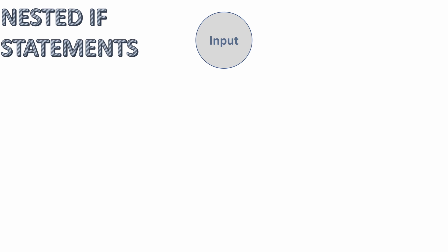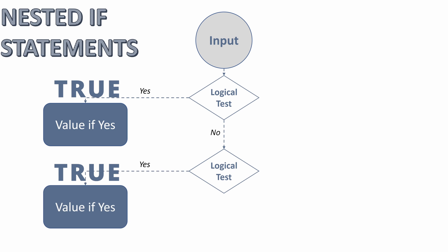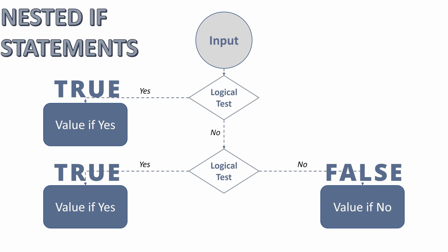So let's talk about nested IF statements. Nested IF statements are going to be very similar to your OR statement, but we'll have multiple values to return if true. You have a logical test — if that value is true, you return a value of yes. If that value is false, you do a different logical test. If that logical test is true, you return a different value of yes. If that second logical test is false, you return a value of no. So here we have three different potential values to return: the value of yes if your first logical test is true, a value if your second logical test is true, and the value to return if neither logical test is true.